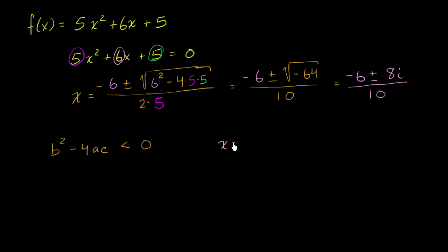Or we could say x is equal to, if we reduce this... they're all divisible by 2, so it's negative 3 over 5, plus or minus 4 over 5i.